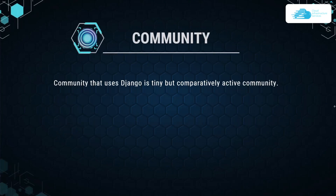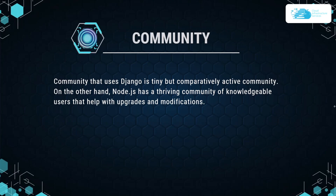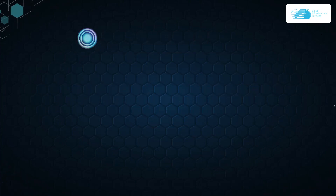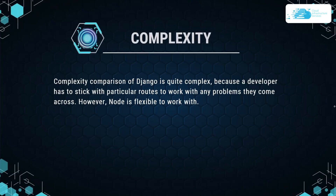Next up we have community. The community that uses Django is small, but comparatively it is a more active community. Node.js, on the other hand, has a thriving community of knowledgeable users that help with upgrades and modifications. Regarding complexity, Django is quite complex because a developer has to stick with particular routes to work with any problems they come across, whereas Node.js is highly flexible to work with.